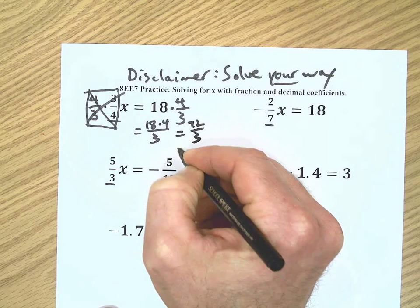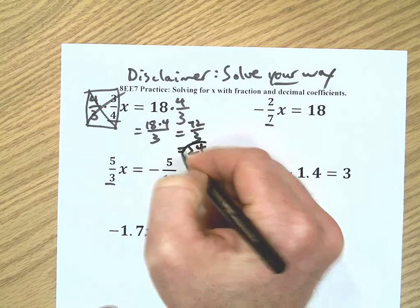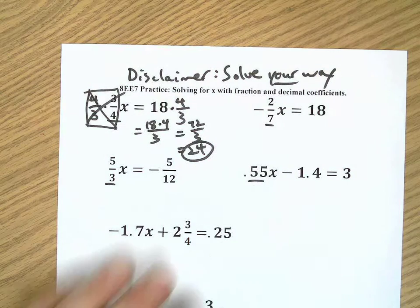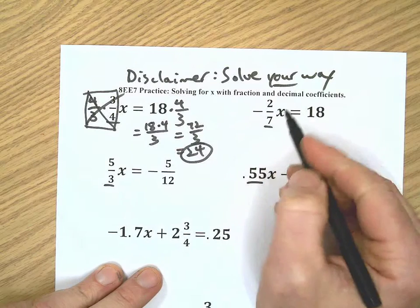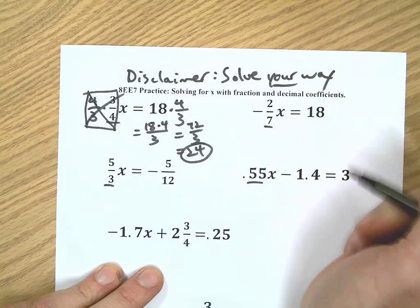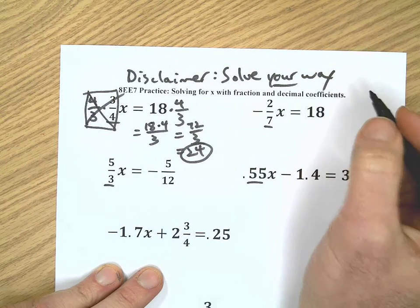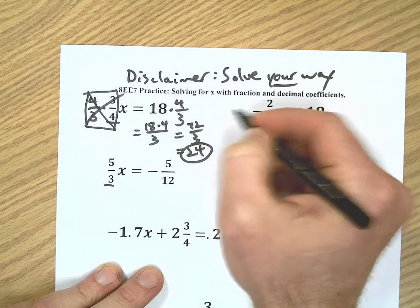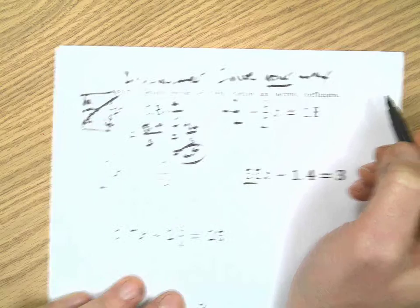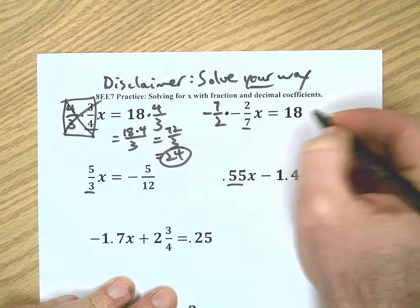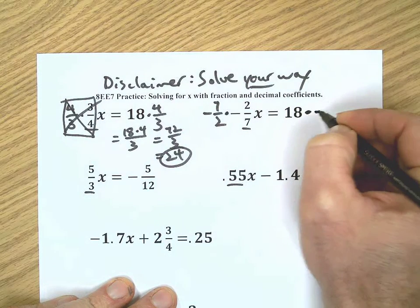Let's do this one. Now the only thing different about this is we have a negative sign. When we use the flip and multiply or the reciprocal multiplication method, flip it and include the sign, because we want to get rid of that sign too. So multiply both sides by that reciprocal of the coefficient including the sign.